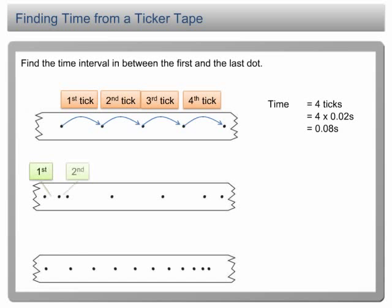In the second strip, there are six ticks from the first dot to the last dot. Therefore,